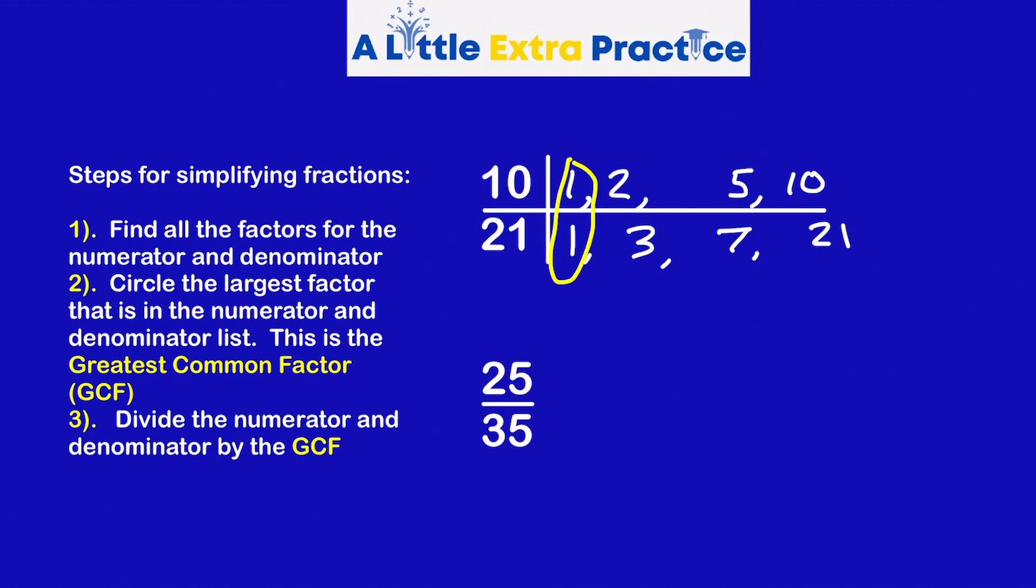They share one, two, three, five, seven, nine. So in this case, the greatest common factor is one. So if I take 10 divided by one, 21 divided by one, I get the same answer. So in this case, 10 out of 21 is already in simplest form. It doesn't look like it, but it is.